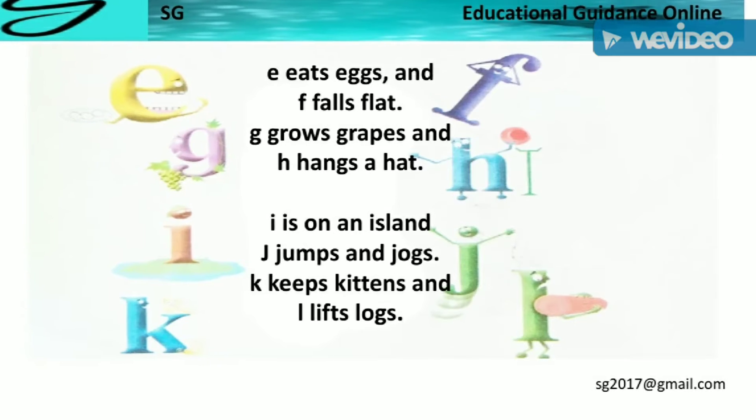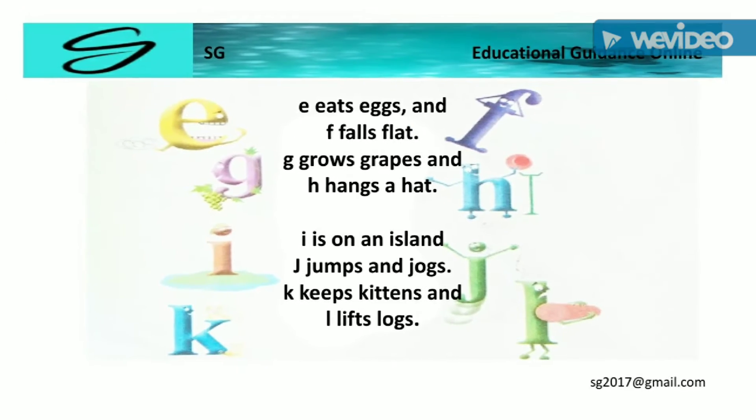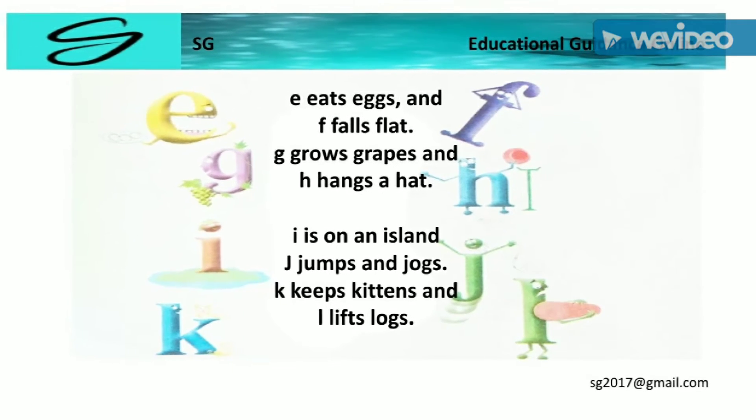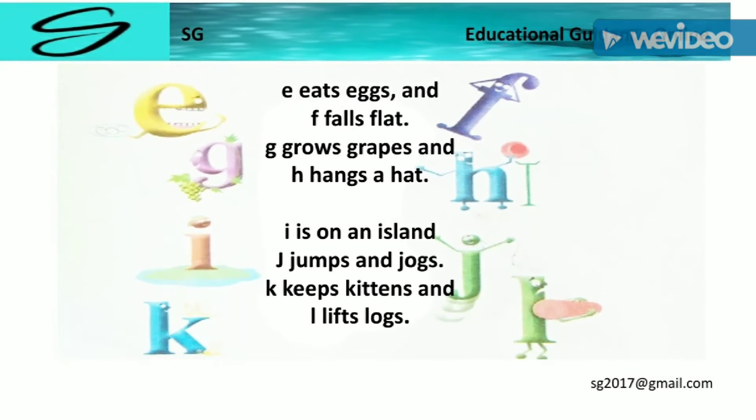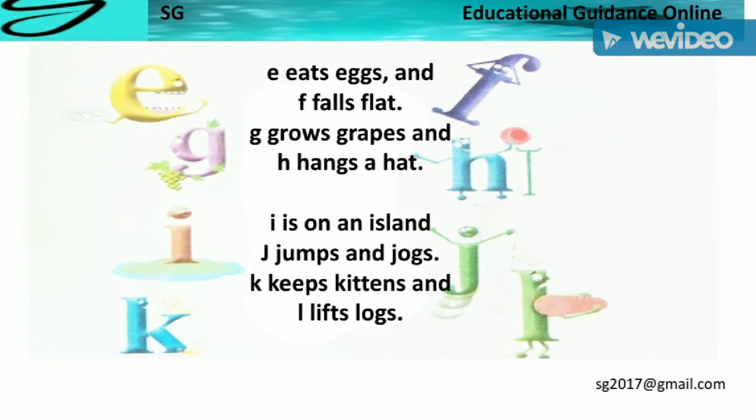I for is on an island, J for jumps and jokes, K for keeps a kitten, and L for leaves and lollipops.